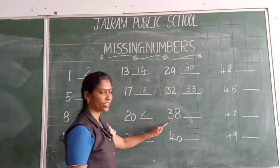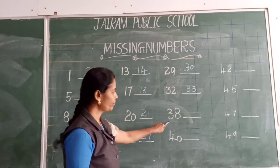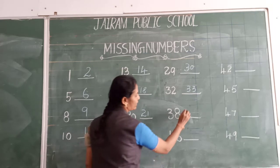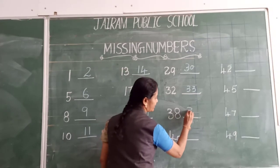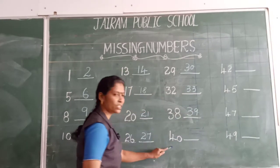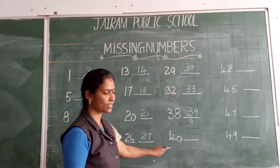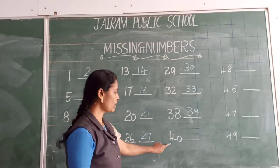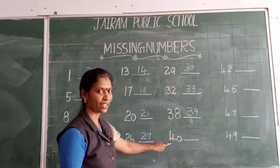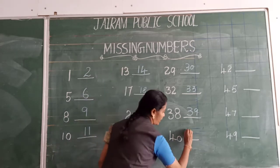What is this number? 38. After 38? 39. What is this number? 40. Yes, 40. After 40, what number is coming, children? After 40? 41.